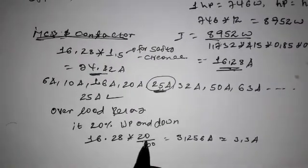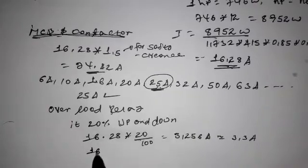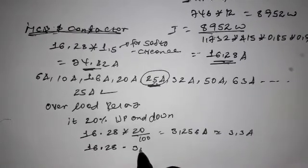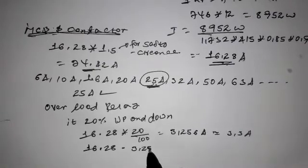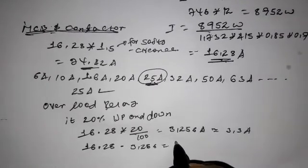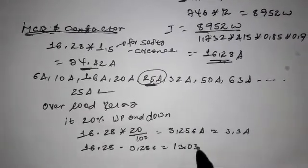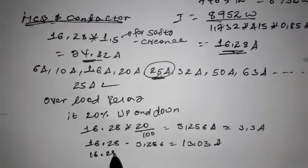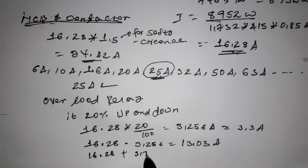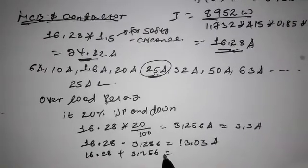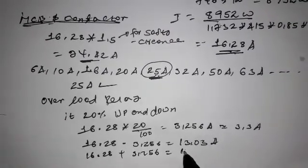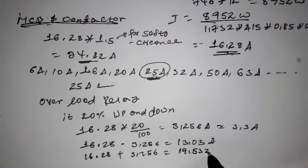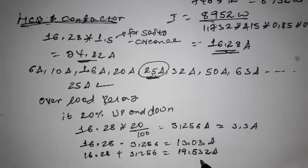3.256 Ampere, approximately 3.3 Ampere. 16.28 minus 3.256 Ampere is equal to 13.03 Ampere. 16.28 plus 3.256 Ampere is equal to 19.536 Ampere.